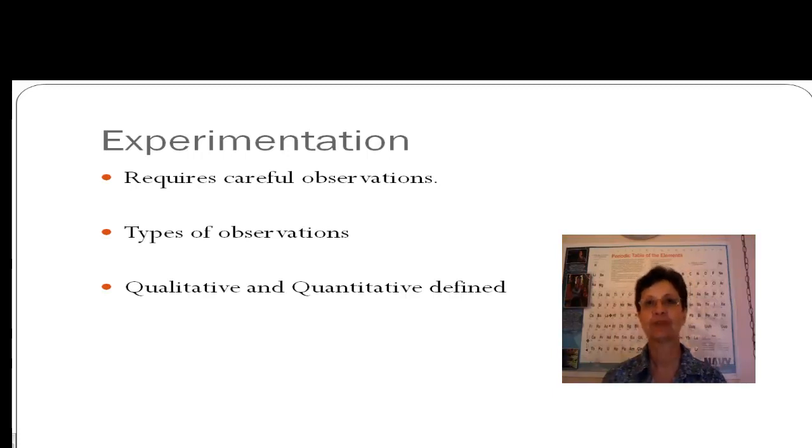Quantitative observations, on the other hand, are made with instruments such as a ruler, balances, graduated cylinders, and thermometers. These result in measurable amounts.